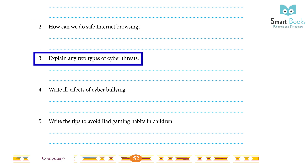3. Explain any two types of cyber threats: Phishing — it is the sending of emails to trick a recipient into handing over money or sensitive personal information like their bank account details or a username and password. Flaming — it refers to sending hateful or rage messages electronically.